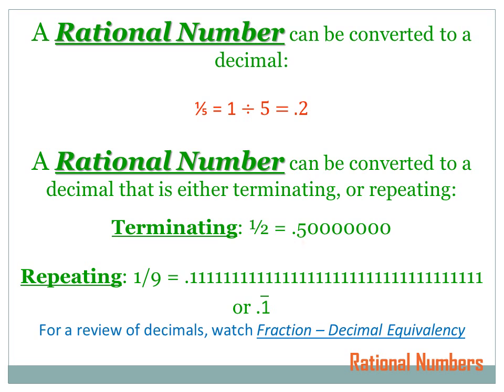A repeating decimal is one which goes on forever repeating the same number or numbers. For instance, 1 divided by 9 becomes 0.111111... and the ones go on forever — the ones repeat. There's a symbol to tell us it's a repeating decimal: a little line above the digit. 0.1 with the line above it is read '0.1 repeating.' If you're having trouble with decimals, it may be worthwhile to review our lesson on fraction-decimal equivalency.